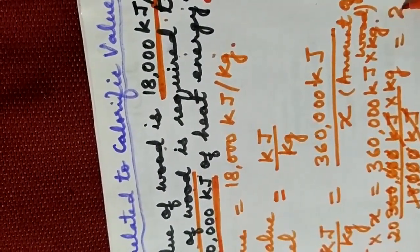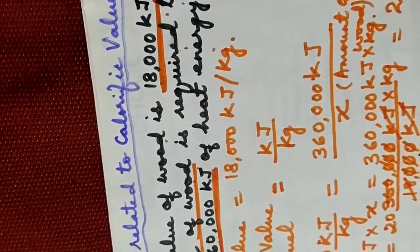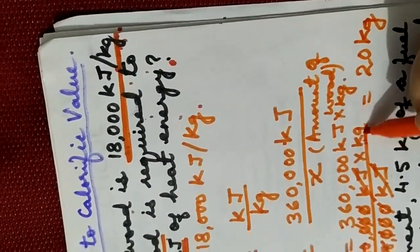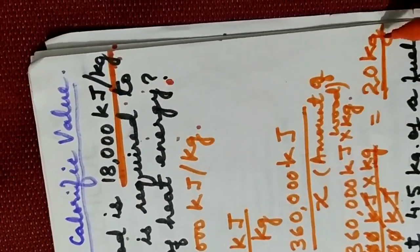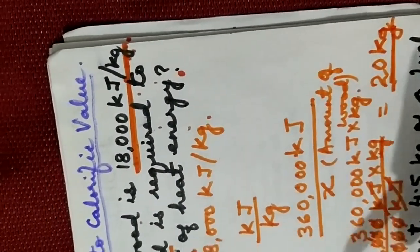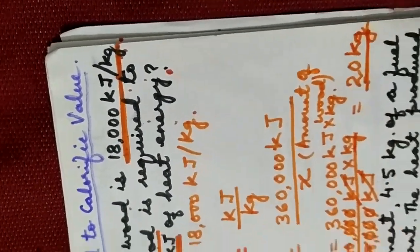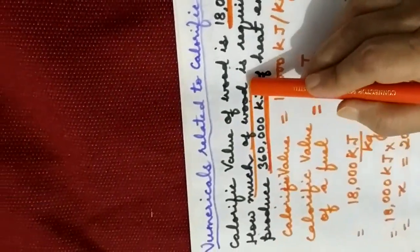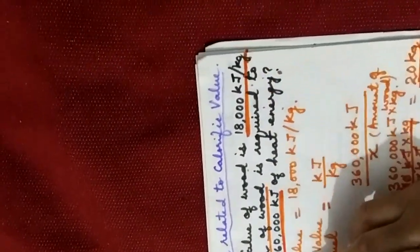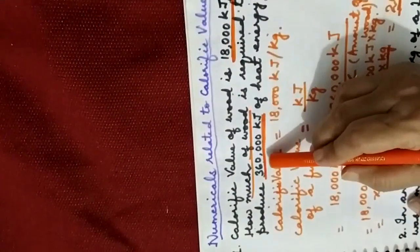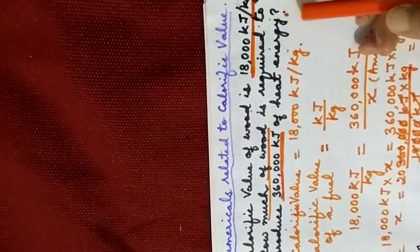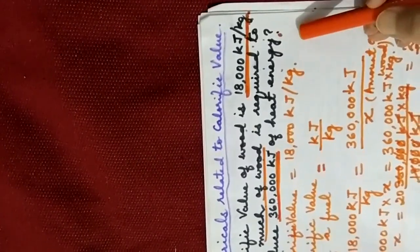The answer is 20 kg. So 20 kg of wood is required to produce 360,000 kilojoules of heat energy.